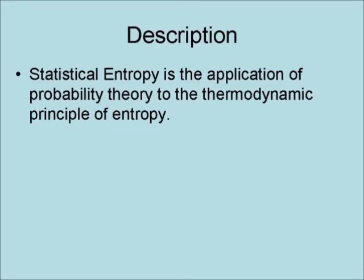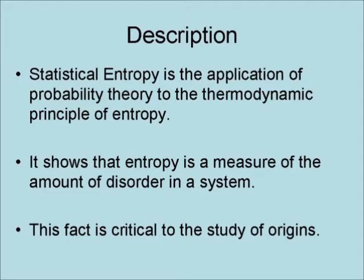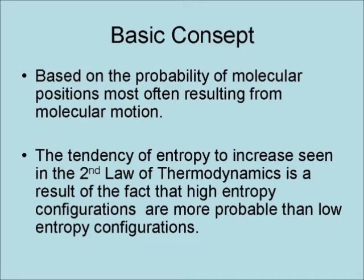Statistical entropy is the application of probability theory to the thermodynamic principle of entropy. It shows that entropy is a measure of the amount of disorder in a system. This fact is critical to the study of origins. Statistical entropy is based on the probability of molecular positions, which most often results from molecular motion. The tendency of entropy to increase, as seen in the second law of thermodynamics, is a result of the fact that high entropy configurations are more probable than low entropy configurations.